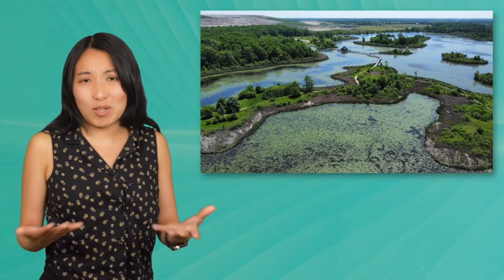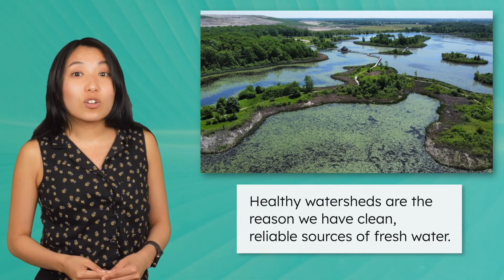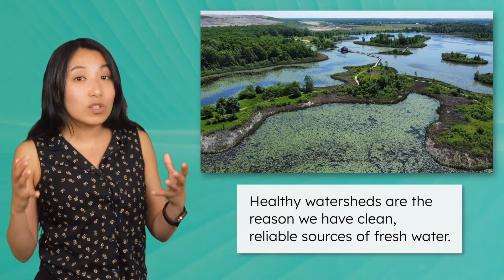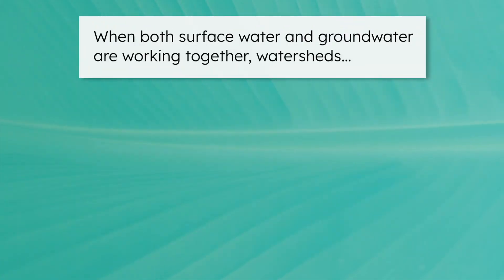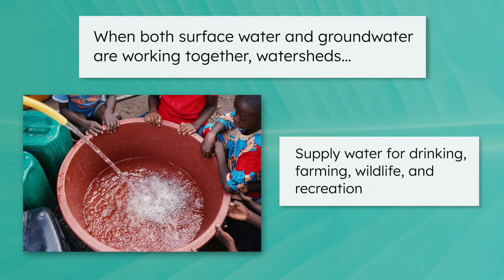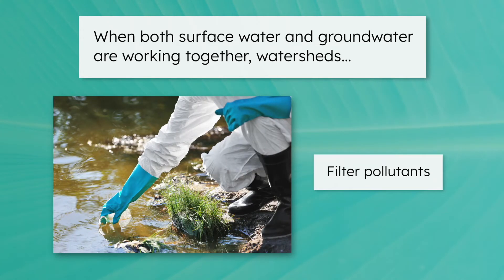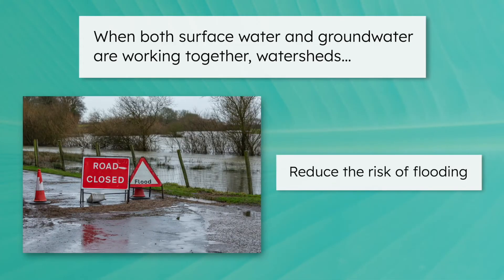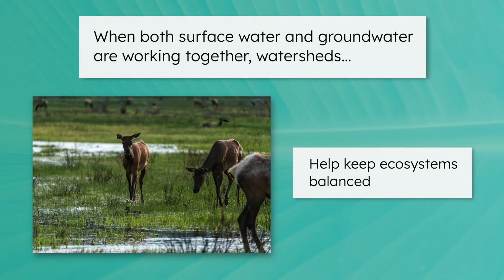Watersheds aren't just interesting to study. They are essential to life. Healthy watersheds are the reason we have clean, reliable sources of fresh water. When both surface water and groundwater are working together, watersheds can supply water for drinking, farming, wildlife, and recreation. They also filter pollutants, reduce the risk of flooding, and help keep ecosystems balanced.